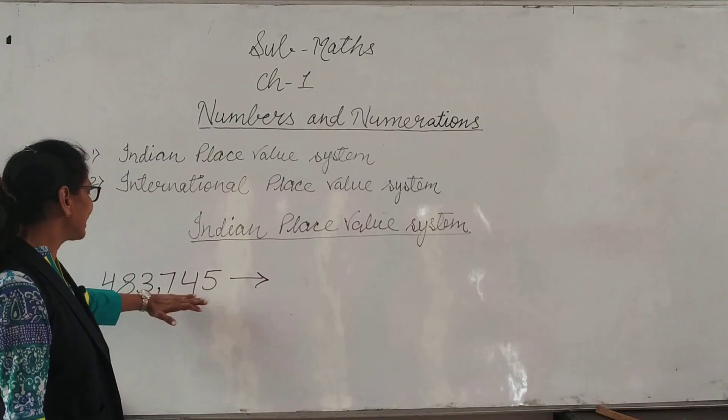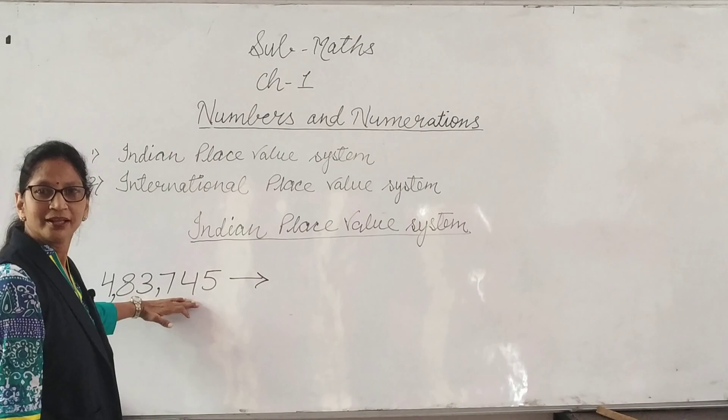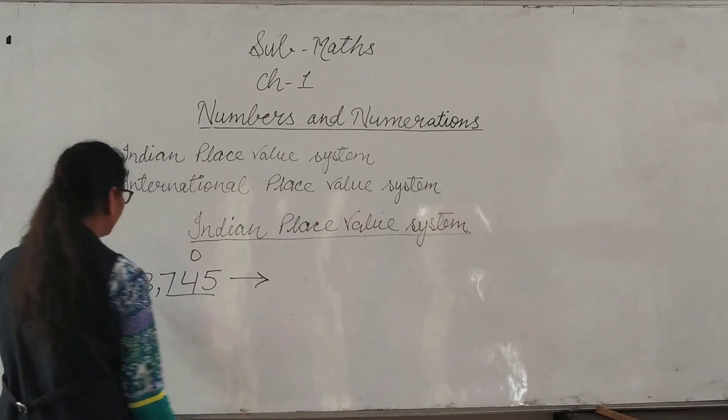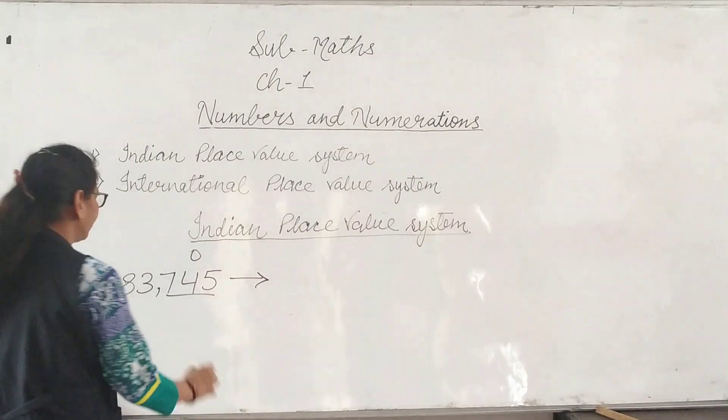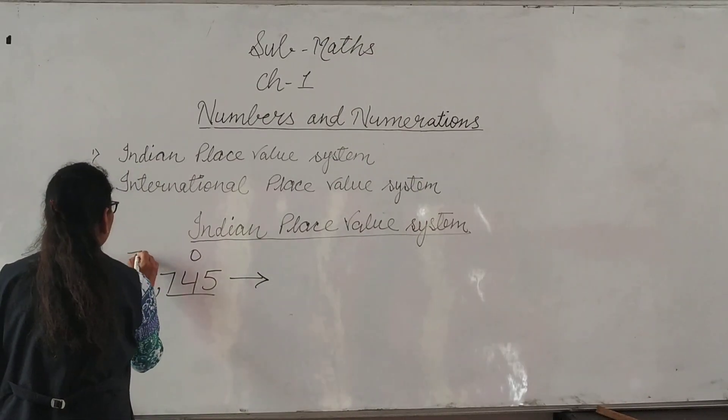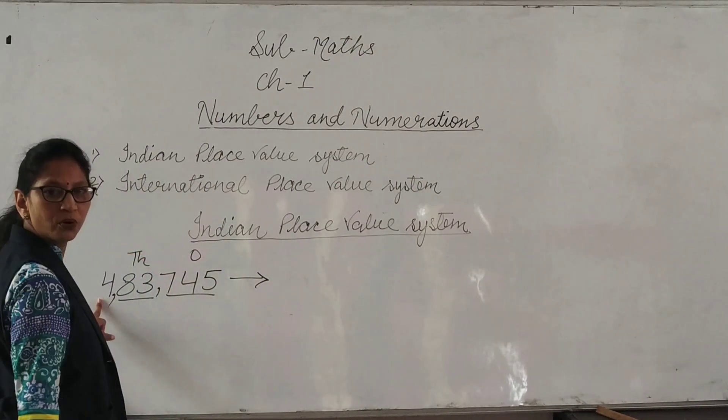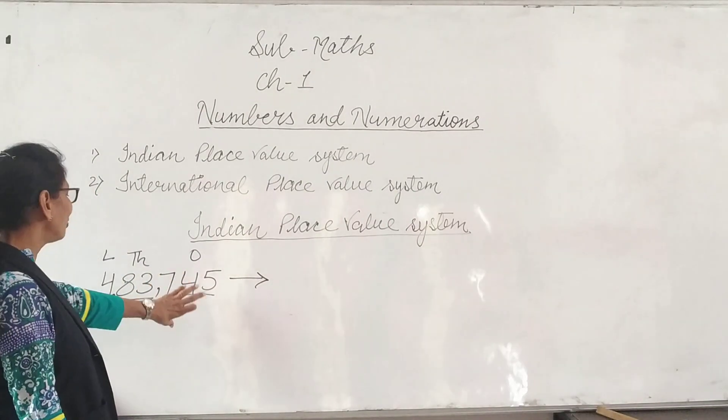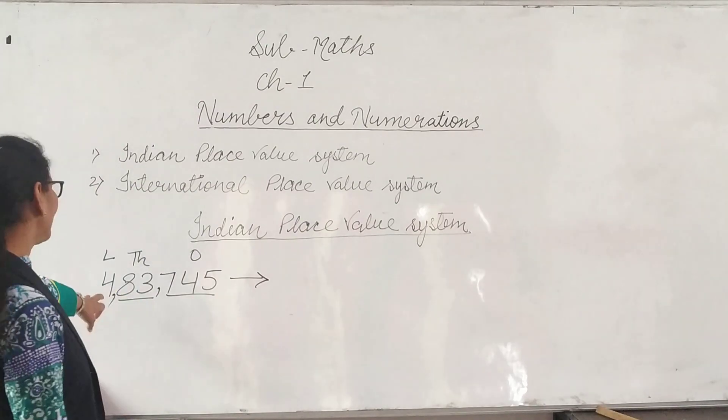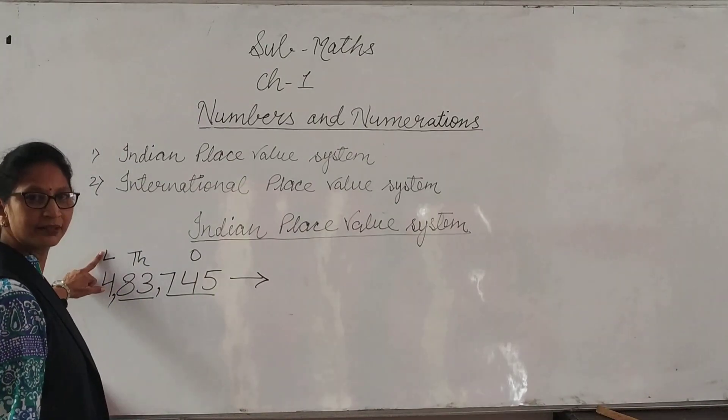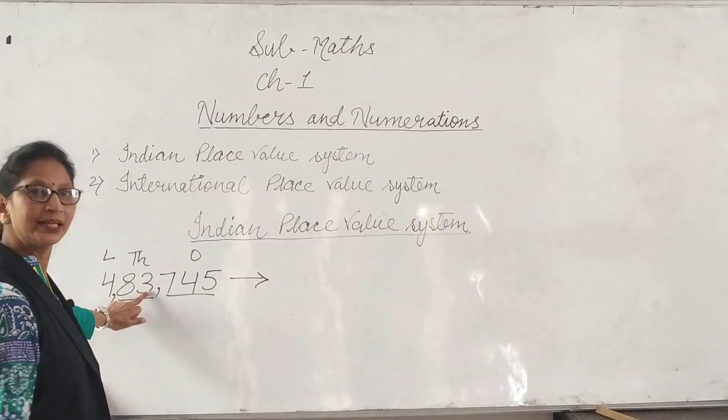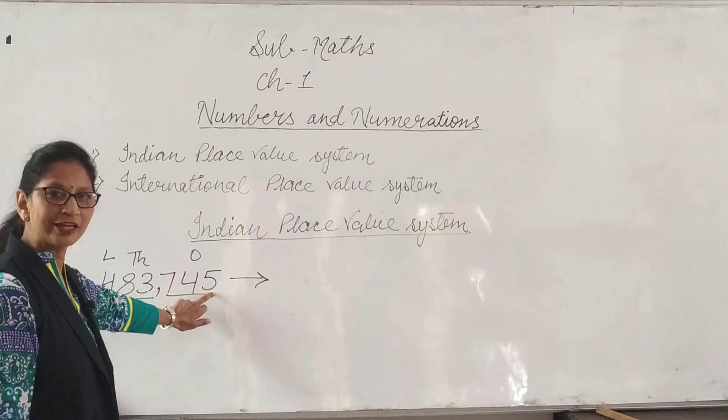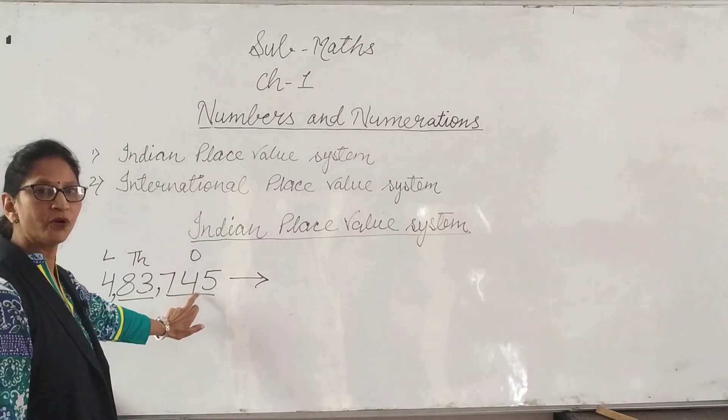And this is lakh. Ones, tens, hundred, that is ones group. Three and eight, that is thousand group. And four is lakh. How to read? In words: Four lakh, eighty-three thousand, seven hundred forty-five.